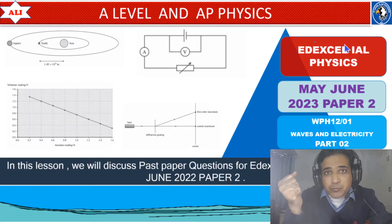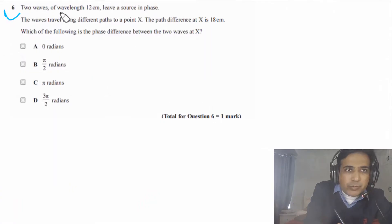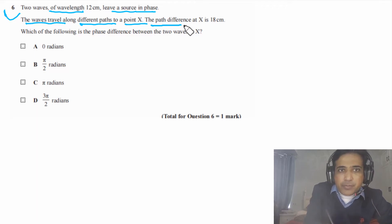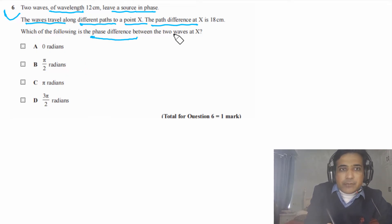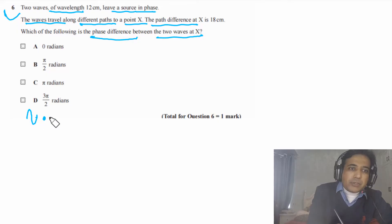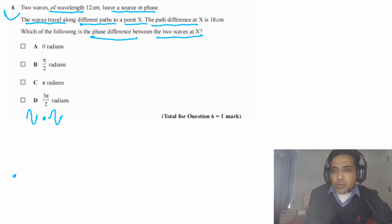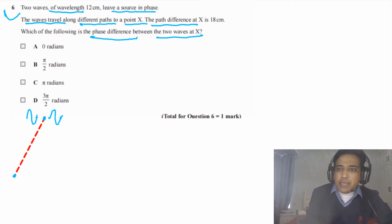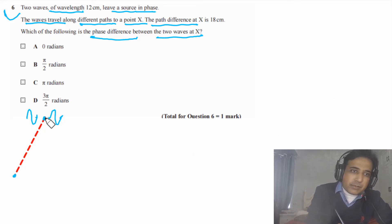Let's study together and improve together. Question 6: two waves of wavelength 12 centimeters leave a source in phase. The waves travel along different paths to a point X. The path difference at X is 18 centimeters. Which of the following is the phase difference between the two waves at X? We can imagine a source from which two waves leave in phase.